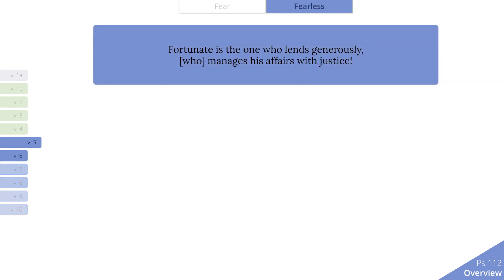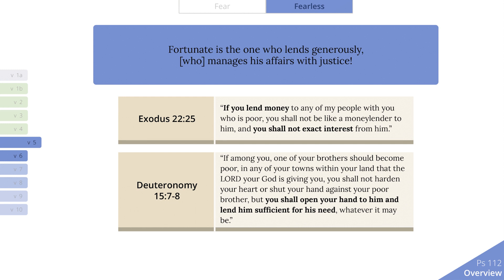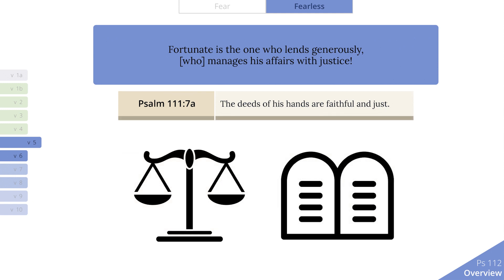Verse 5: 'Fortunate is the one who lends generously, who manages his affairs with justice.' Not only does this man deserve to be admired for what God gives to him, but he is also considered fortunate for what he gives to others. As mentioned in verse 3, this generosity extends to finances — this man lends generously, following the requirements of the law as outlined in Exodus 22 and Deuteronomy 15. Generosity is a concrete expression of fearing the Lord. Managing affairs with justice again recalls Psalm 111, where it is the Lord's deeds that are faithful and just. The same character of the lawgiver is now mirrored in the law follower.